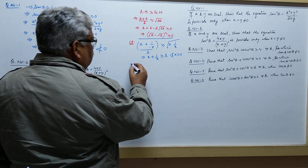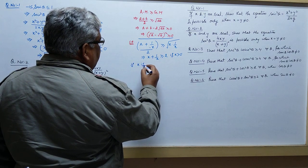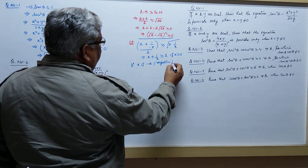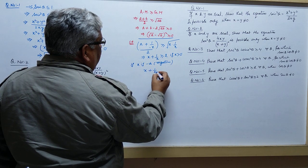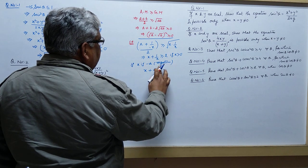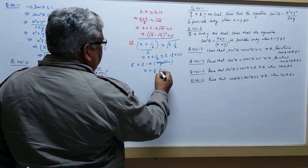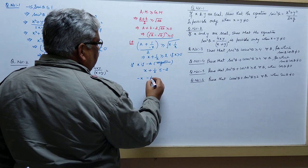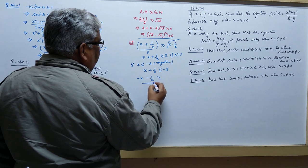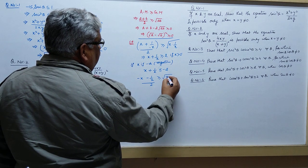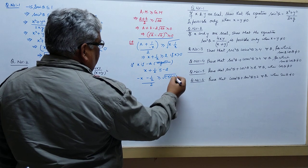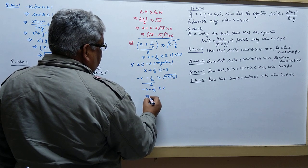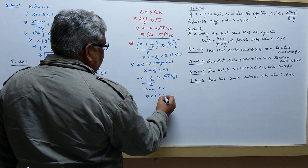And if the number is negative — if x is negative — then a number and its reciprocal will always be less than or equal to minus 2. Using AM-GM on the negative case: under root of minus x into minus 1 by x equals 1, so x minus 1 by x is greater than 2, meaning x plus 1 by x is less than minus 2.